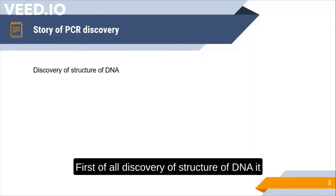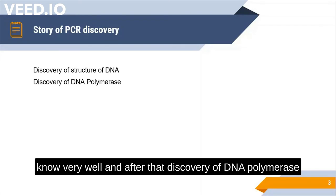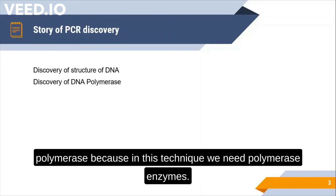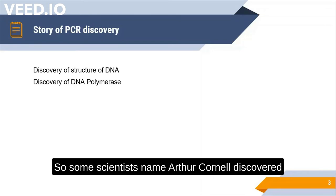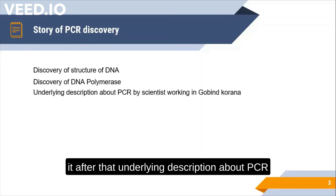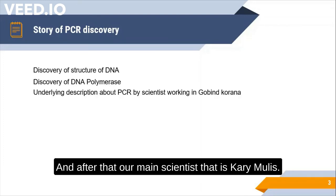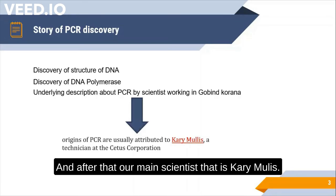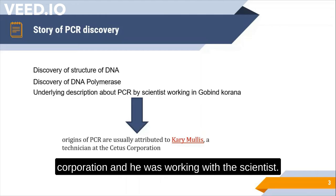First came the discovery of DNA structure in 1953 by James Watson and Francis Crick. Then in 1956, scientist Arthur Kornberg discovered DNA polymerase — the enzyme essential to PCR. After that, an underlying description of PCR was given, and the main scientist behind PCR was Kary Mullis, an American who was working at Cetus Corporation in California after completing his PhD.